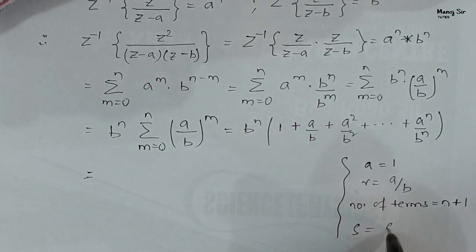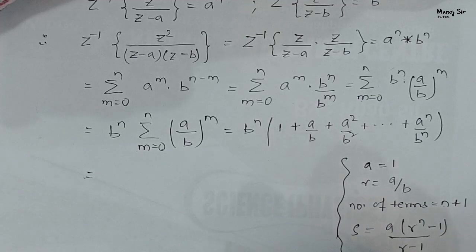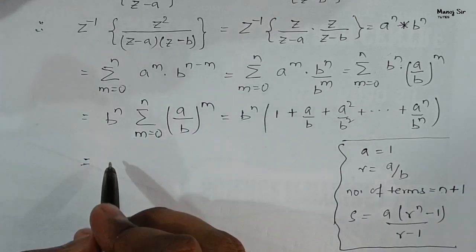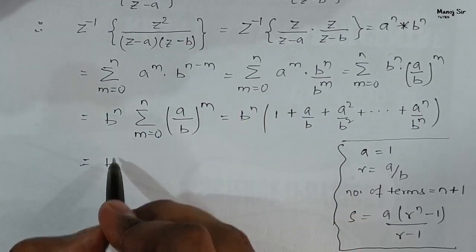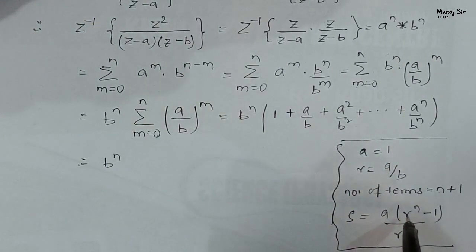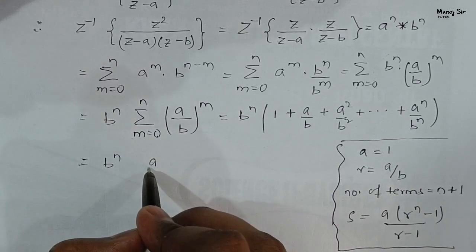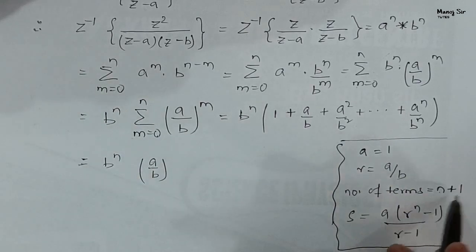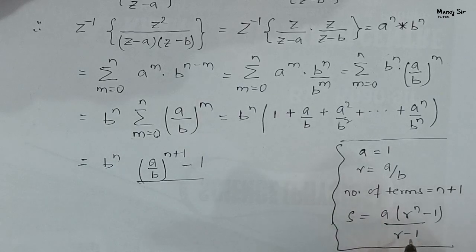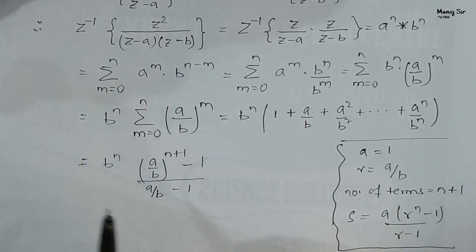The sum of a GP series is given by a · (R^(number of terms) − 1) / (R − 1). Applying this: B^n · [(A/B)^(n+1) − 1] / (A/B − 1). Expanding, the numerator becomes A^(n+1)/B^(n+1) − 1, which with LCM gives (A^(n+1) − B^(n+1)) / B^(n+1). The denominator is (A − B)/B.